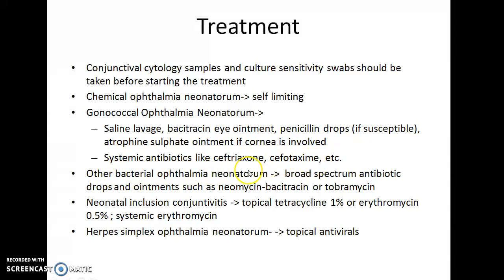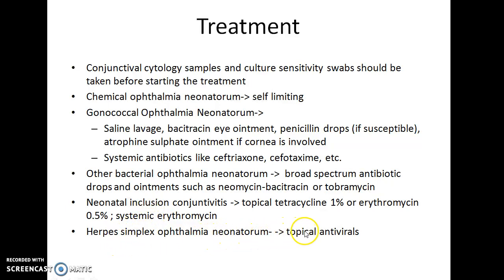Other bacterial Ophthalmia Neonatorum can be treated with broad-spectrum antibiotic drops and ointments such as Neomycin, Bacitracin, or Tobramycin. Neonatal Inclusion Conjunctivitis should be treated with topical tetracycline 1% or erythromycin 0.5%. Systemic erythromycin should also be given in cases caused by chlamydia. Herpes simplex Ophthalmia Neonatorum can be treated with topical antivirals.